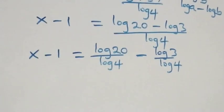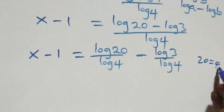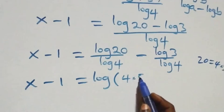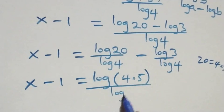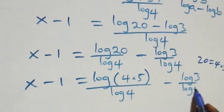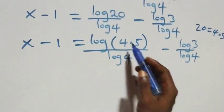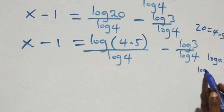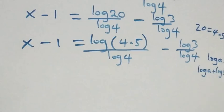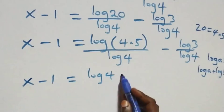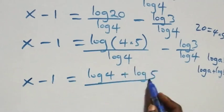From what we have here, we can separate 20 as 4 times 5. It implies x minus 1 equals log(4 times 5) over log 4, minus log 3 over log 4. Also, using the product rule log(a times b) equals log a plus log b, what we have becomes x minus 1 equals log 4 plus log 5, over log 4, minus log 3 over log 4.